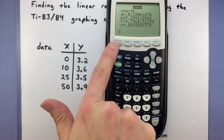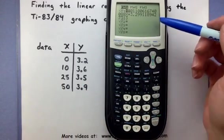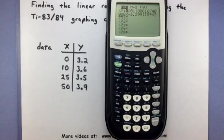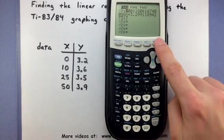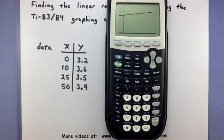If you press your Y equals button, you can see that it has also stored this equation under Y1. Now if we take a look at our graph by pressing GRAPH, it not only displays the data, but also displays this best fit line. That's kind of neat.